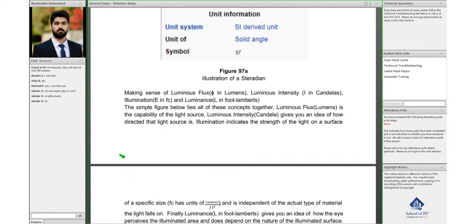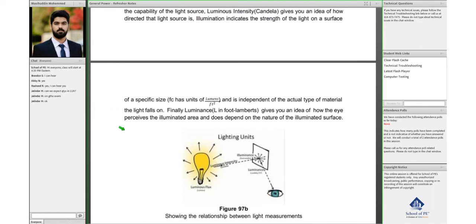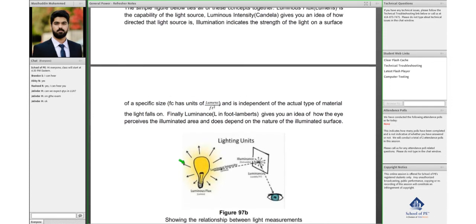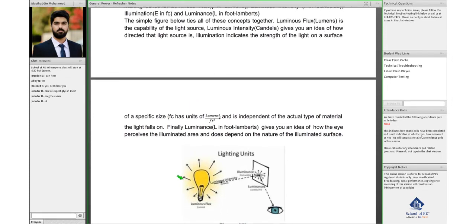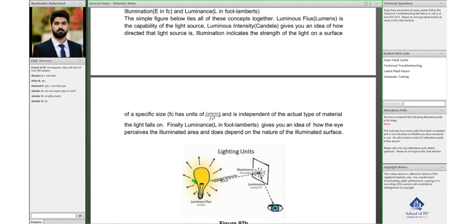Let's look at an illustration of the relationship between all these different terms. This is a good picture that shows that. Luminous flux, like I said, it's the potential that a light has.